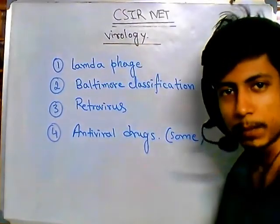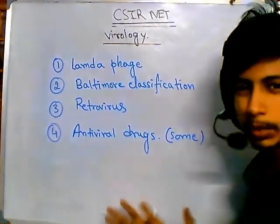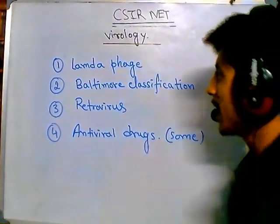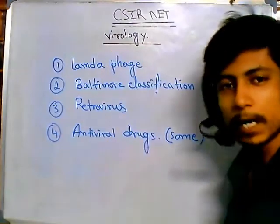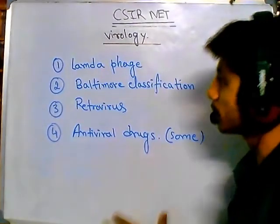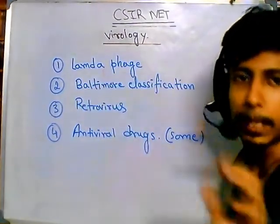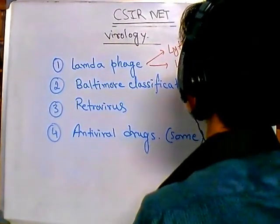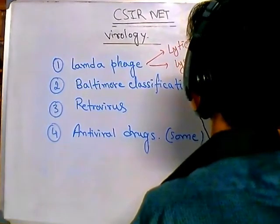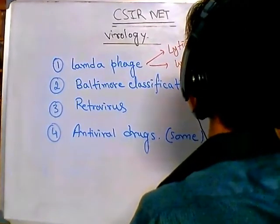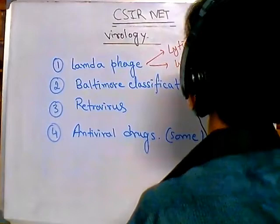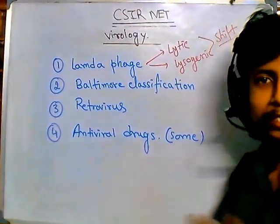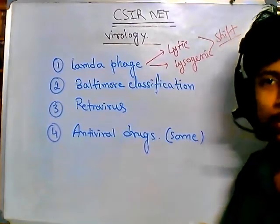I may have included this part with microbiology but I excluded it because viruses deserve their own dedicated section. Among the virology part, what we need to understand is majorly the lambda phage — especially its two different cycles, the lytic and lysogenic cycle. The most important thing is the shift between these cycles, including the Cro protein and the CI and CII proteins and their activities.